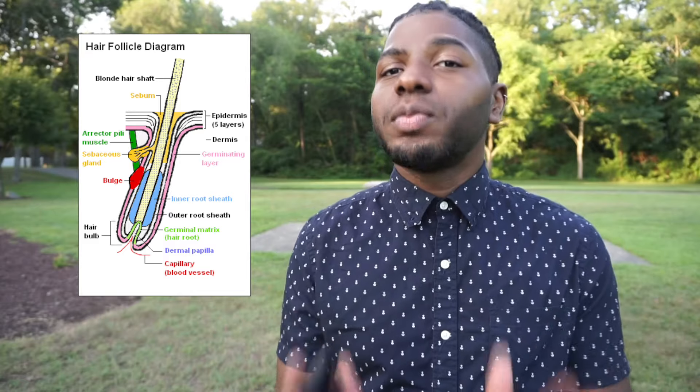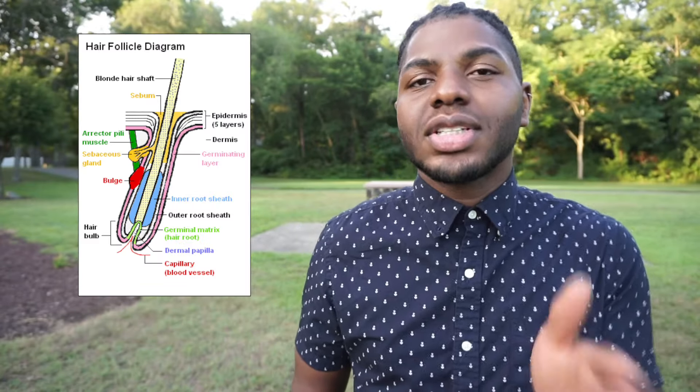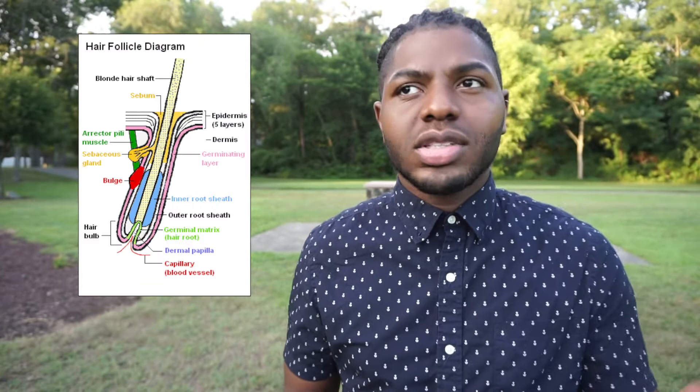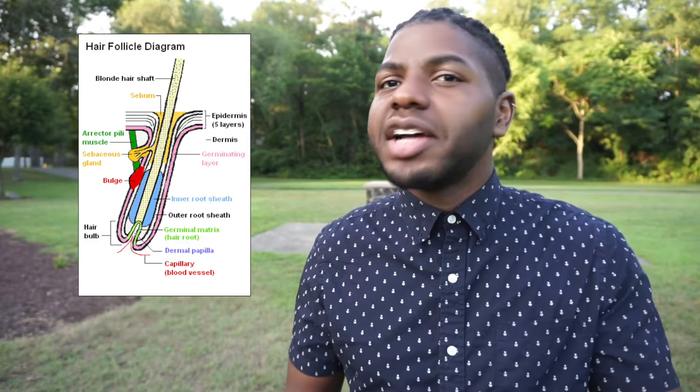There are a couple of things that are important to know. This is called the germinal matrix, also known as the hair root. You can think of this as the root of a plant — just as a plant's root grows the stem of a plant, your hair root grows the stem of your hair, also known as the hair shaft. So now that we understand that within a hair follicle lies a hair root that grows a hair shaft, we can move on.